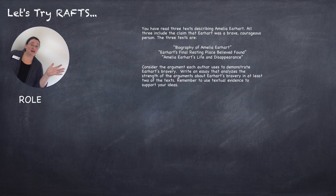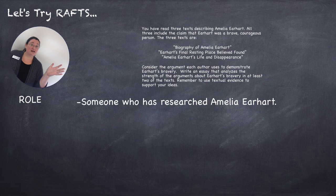We want kids to get away from using themselves as the role all of the time. So the role for this particular prompt I would say is someone who has read these articles about Amelia Earhart, or someone who knows something about Amelia Earhart — because we want to get away from just choosing myself as the role. Then we get into audience.